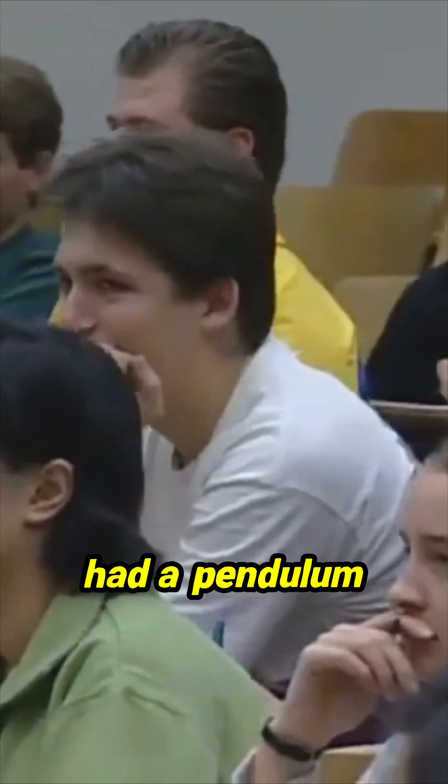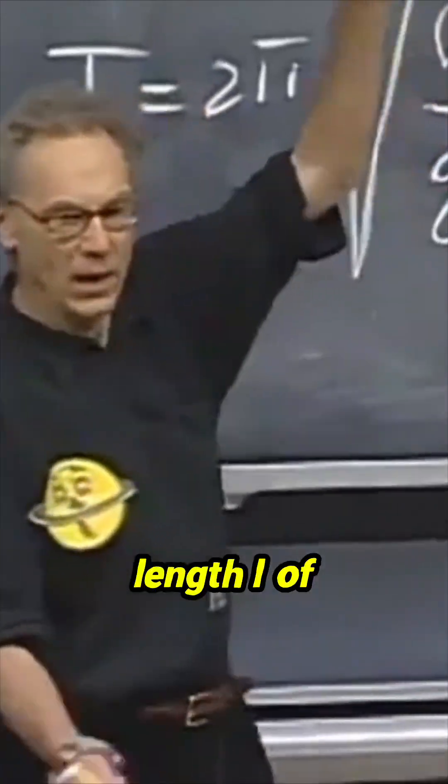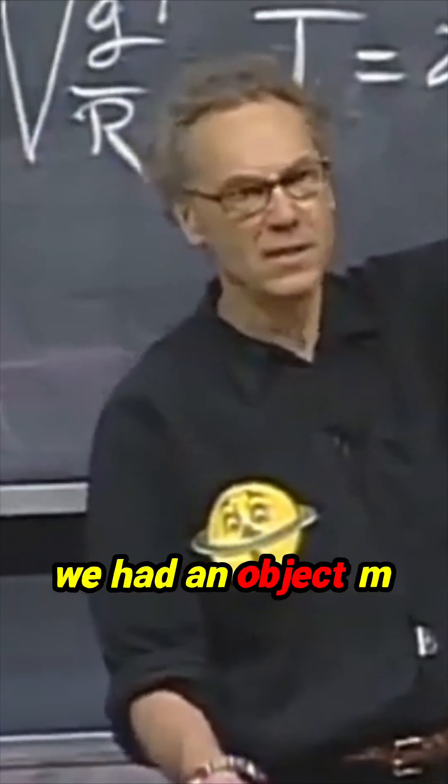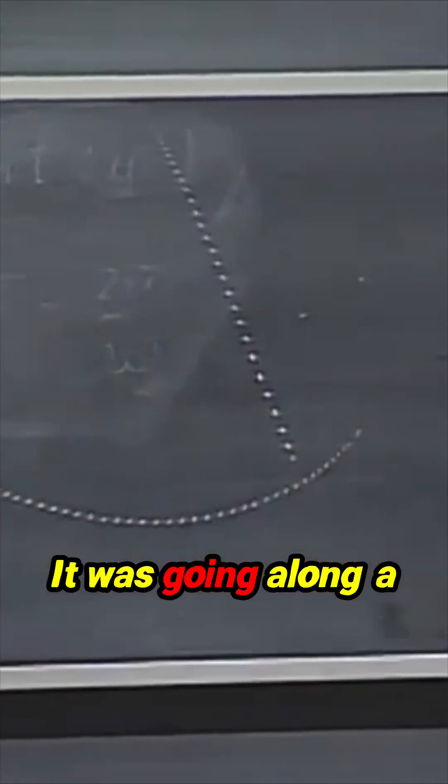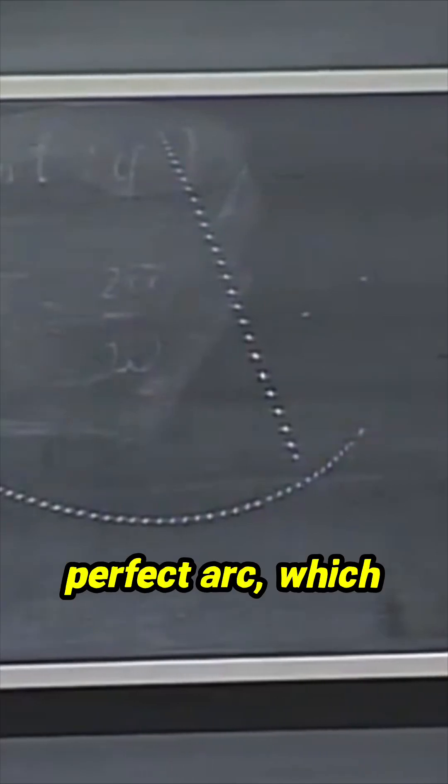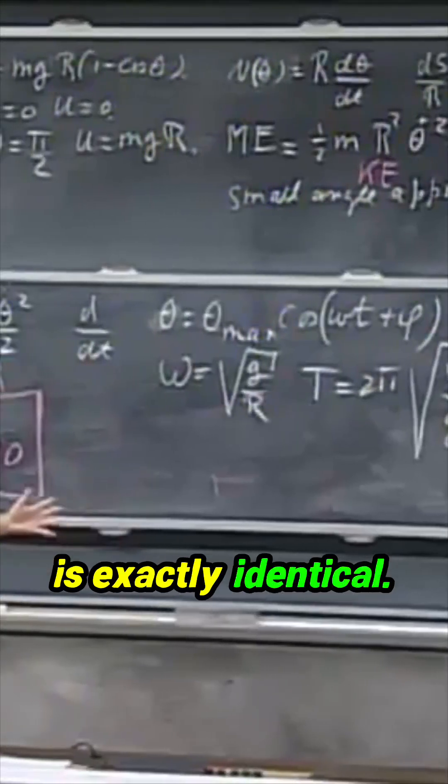We had a pendulum with length L of a massless string and an object M hanging on the end. What was it doing? It was going along a perfect arc, which is exactly identical.